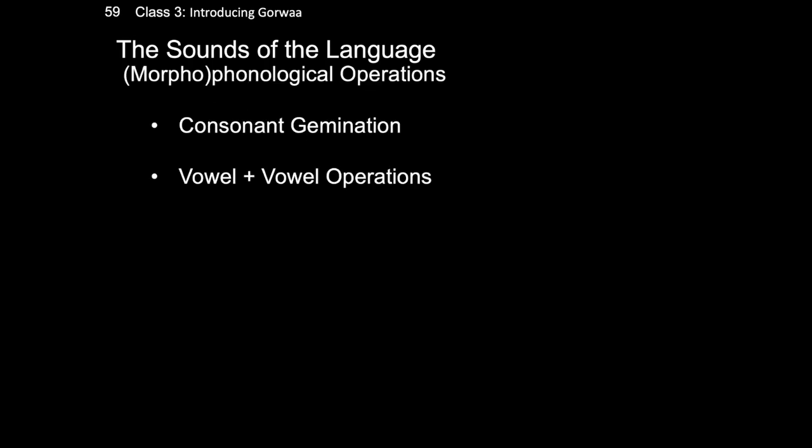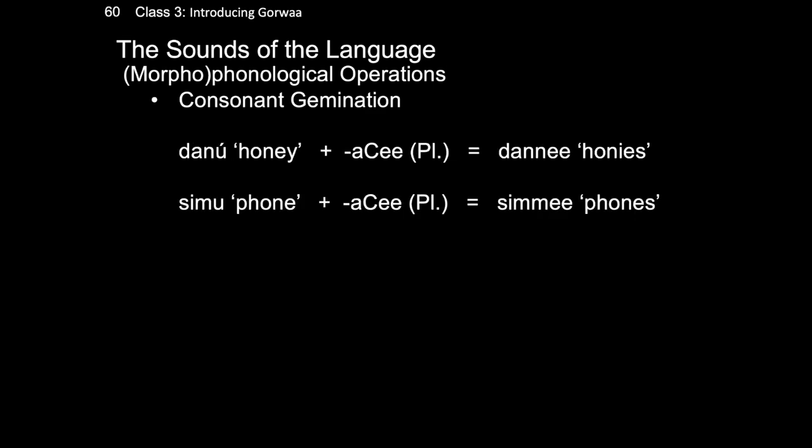I would like now to talk briefly about how the sounds of Gorwa interact with the morphology of Gorwa, specifically what happens when consonants come together and when vowels come together. When two consonants come together, they are often realized as a geminate consonant. The word danu, meaning honey, when pluralized is usually realized with a geminate N, so the form that we get is danne. The same occurs with the noun for phone: simu in the singular becomes simme in the plural.